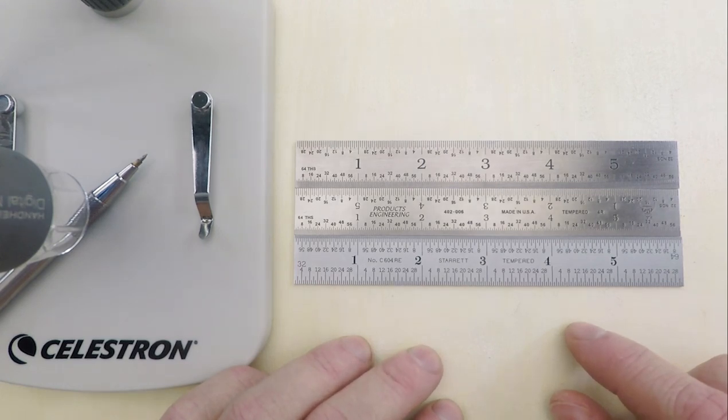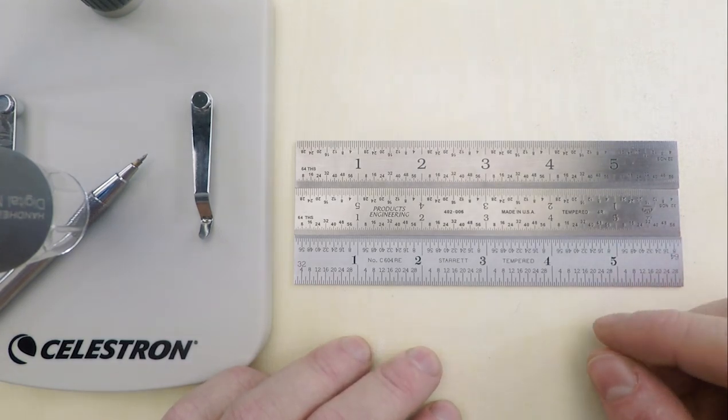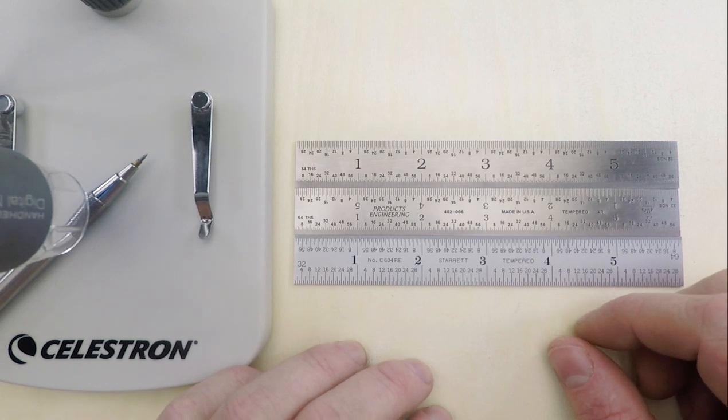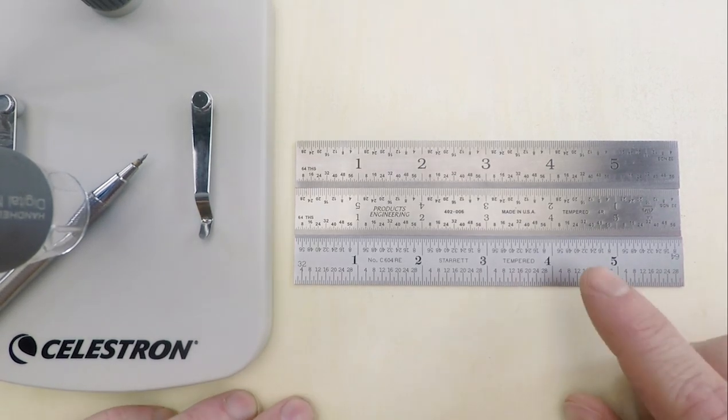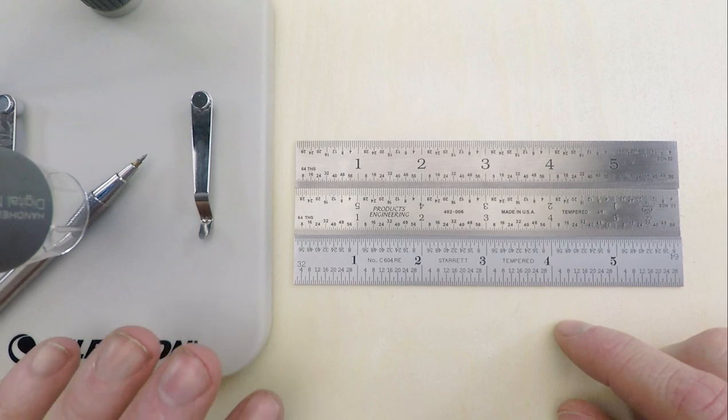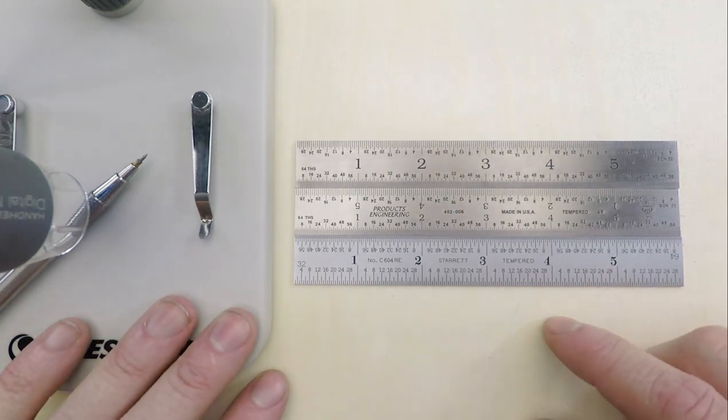So, taking accuracy as given, the second most important factor I'd argue is readability. And here you do start to see significant differences between these tools, with Starrett pretty clearly leading the pack. I'm gonna use the microscope here to show you why I think that is.